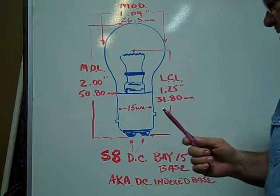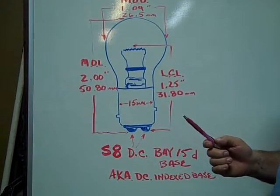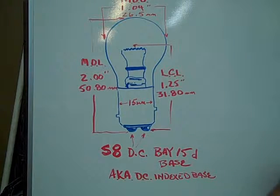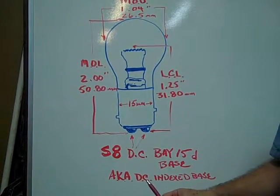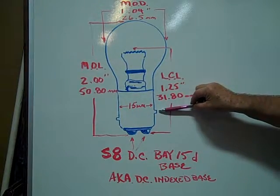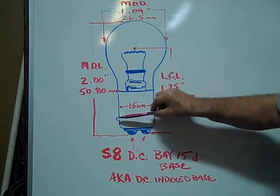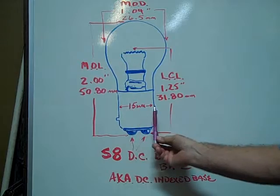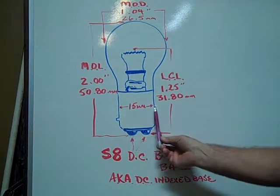The S8 DC BAY 15D base, also known as the dual contact indexed base, has pins that are indexed offset. The base is 15 millimeters in diameter.